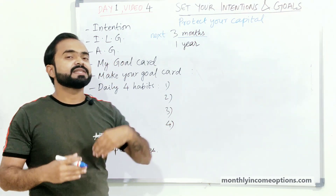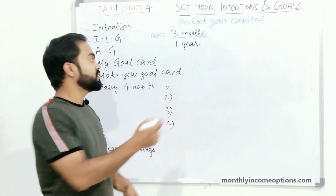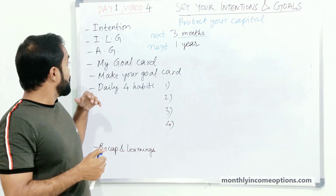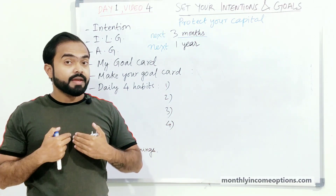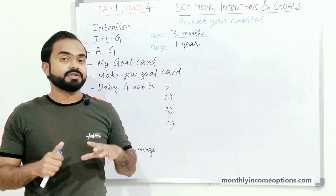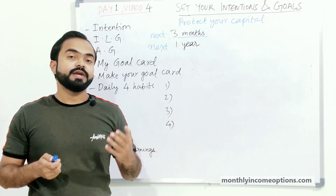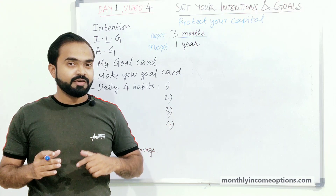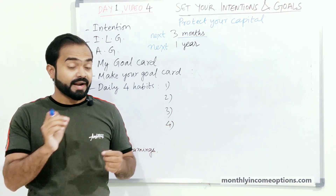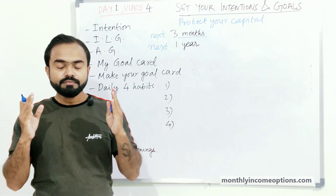AG is the Aspiration Goal — a slightly longer-term goal, say in the next one year. I would like to share my goal card with you and tell you the exact words I use. I recommend you also create your own goal card. Below this video I will give you a template — just print it out and write your goal in your own handwriting.